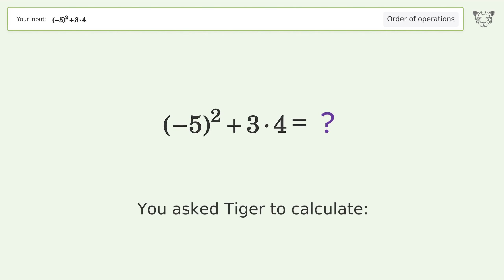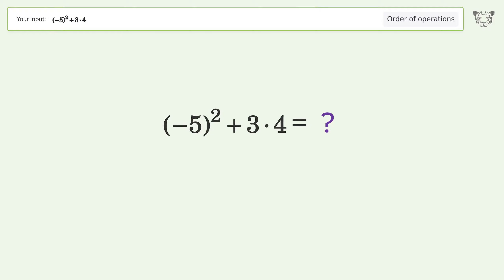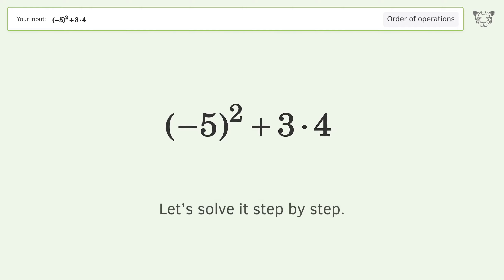You asked Tiger to calculate. This deals with the order of operations. The final result is 37. Let's solve it step by step.